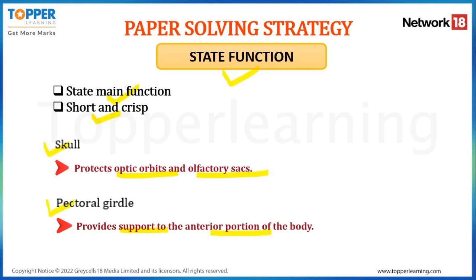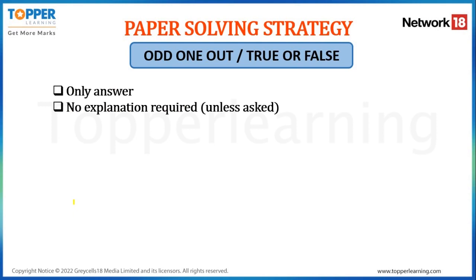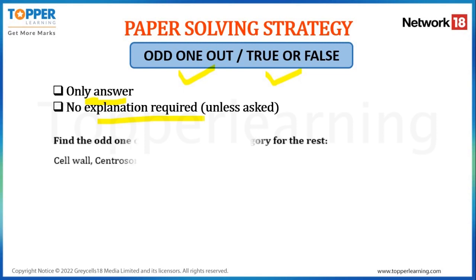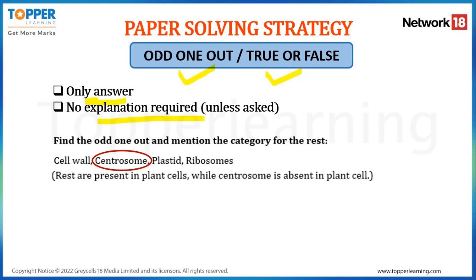Let's move to another typology of question: 'state odd one out' or 'write true or false.' In both these typologies, you are expected to write only the correct answer. No explanation is required unless the question demands so. For example, find the odd one out and mention the category for the rest — here the question demands you to find the odd term and also explain why it is the odd one out. In this example, the odd term is centrosome, because it is an organelle present only in animal cells. The rest — cell wall, plastids, and ribosomes — are present in plant cells, whereas centrosome is absent in plant cells.